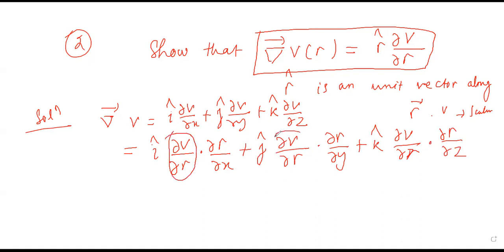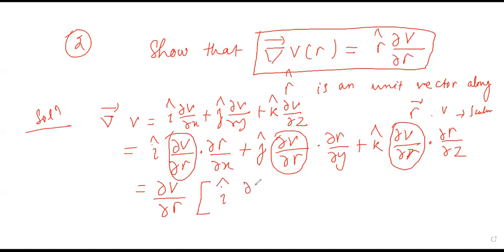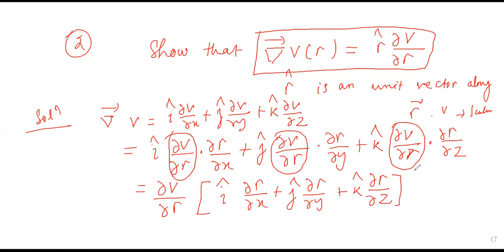We can factor out ∂v/∂r, which is common to all three terms, giving: ∇v = (∂v/∂r)[î(∂r/∂x) + ĵ(∂r/∂y) + k̂(∂r/∂z)]. Now we need to find ∂r/∂x, ∂r/∂y, and ∂r/∂z to simplify further.